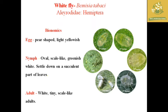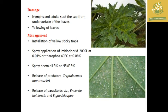The next pest is Whitefly, where the scientific name is Bemisia tabaci, belonging to the family Aleyrodidae and order Hemiptera. Regarding bionomics, the egg is pear-shaped, the nymph is an oval small scale-like structure that is greenish-white in color, and the adult is whitish with tiny wings. The major symptom is that nymphs and adults suck the plant sap from the undersurface of the leaves, causing yellowing of the leaves.